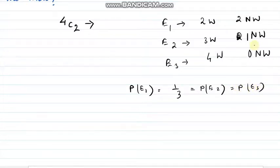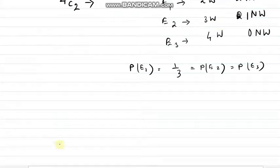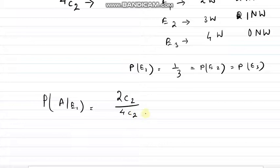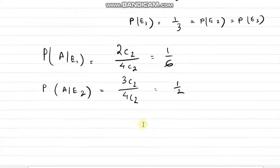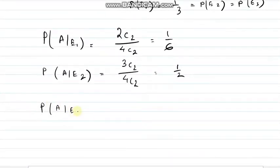Now let A be the event that 2 drawn balls are white. For the first case, P(A|E1) = 2C2 divided by 4C2 = 1 divided by 6. For the second case with 3 white balls, P(A|E2) = 3C2 divided by 4C2 = 1 divided by 2. For the third case with all 4 white balls, P(A|E3) = 1, since all balls are white.